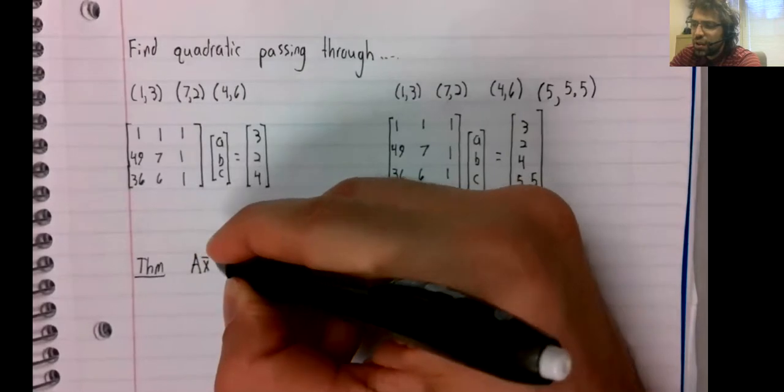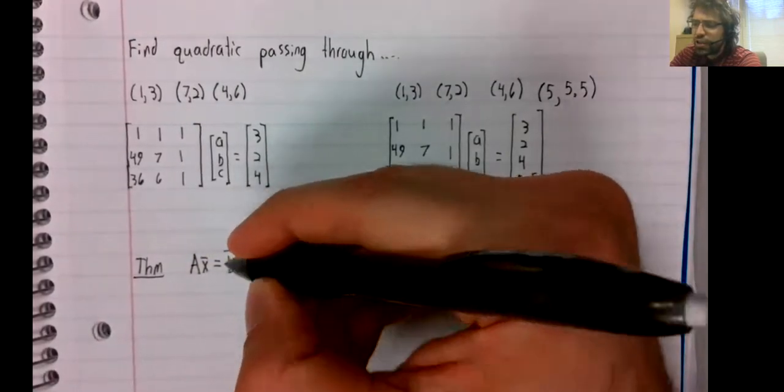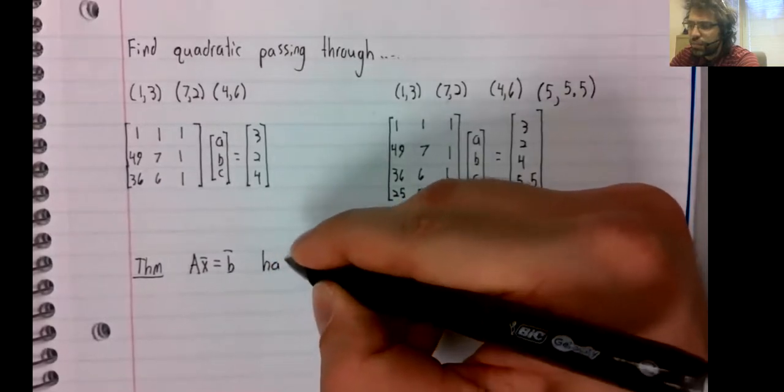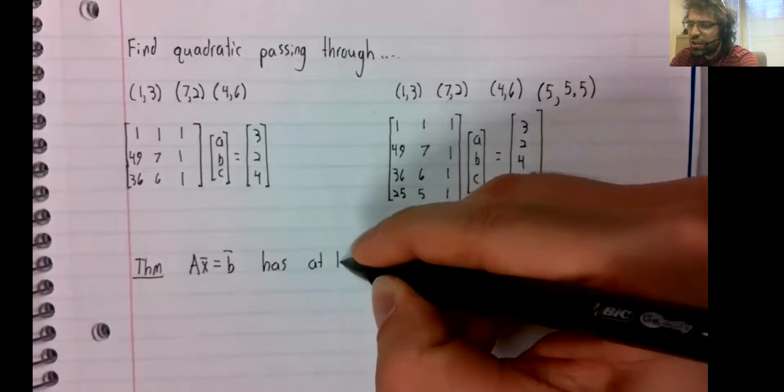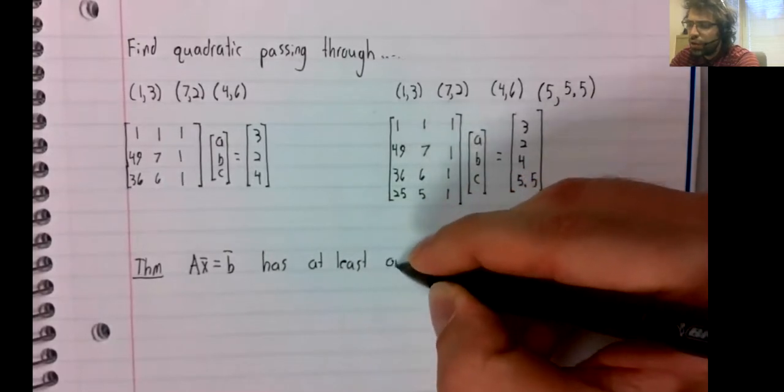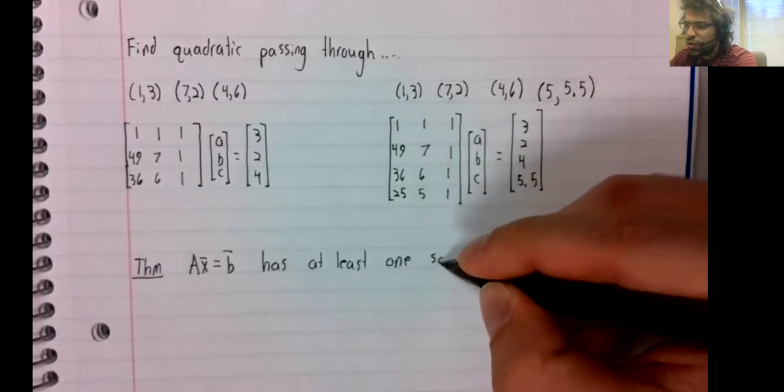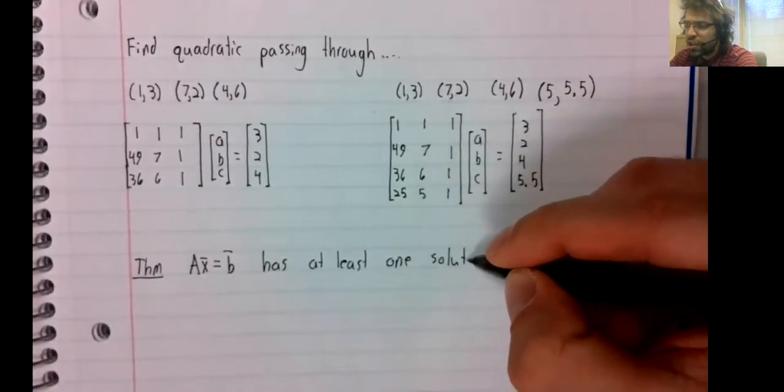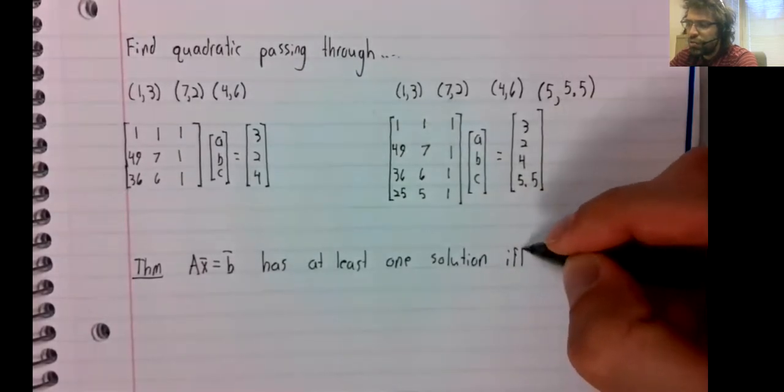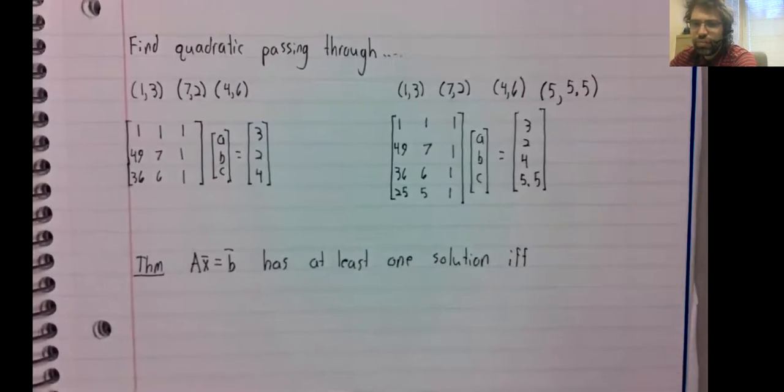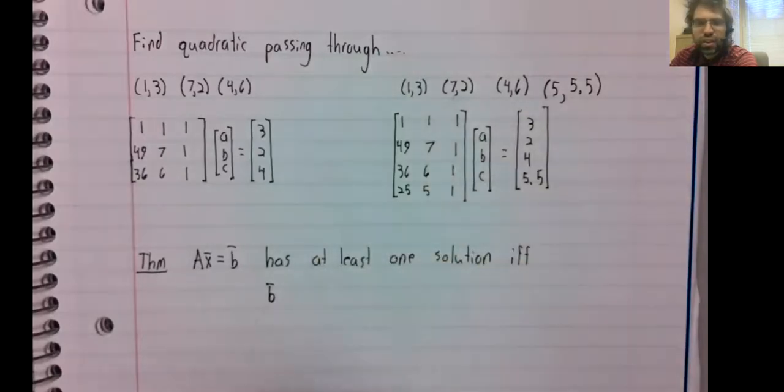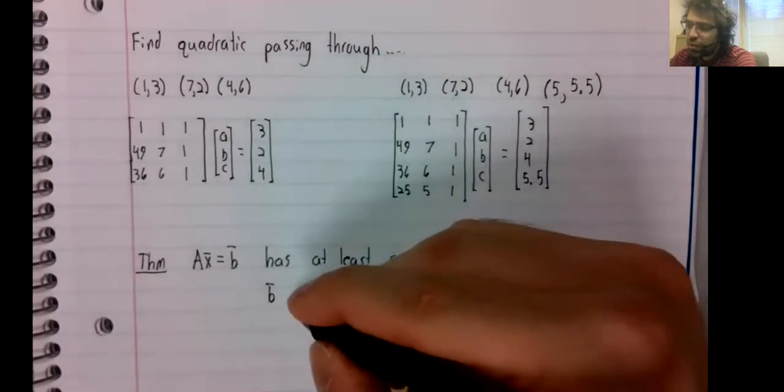A matrix equation Ax = b has at least one solution if and only if the vector on the right-hand side of that equality...